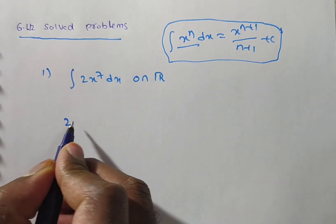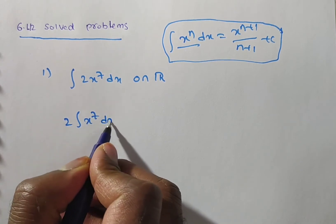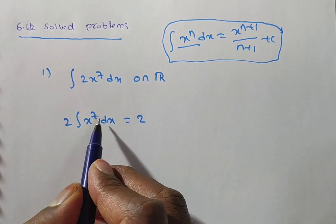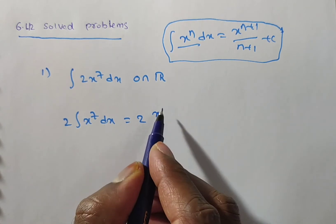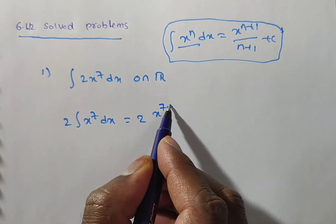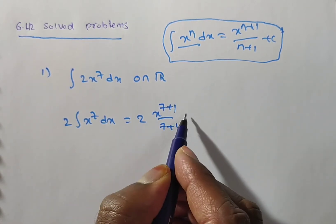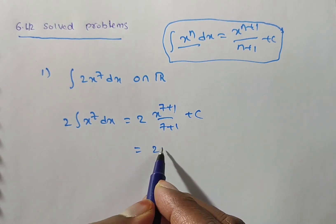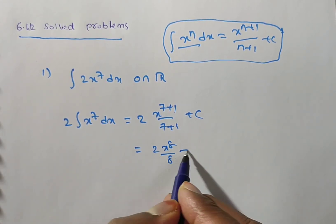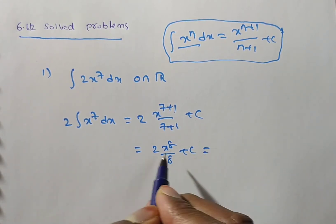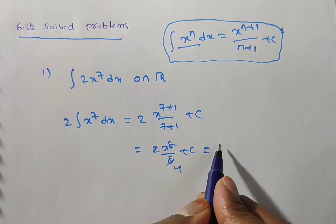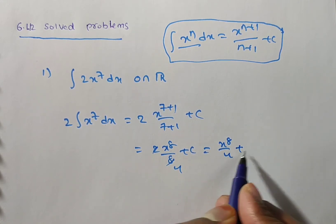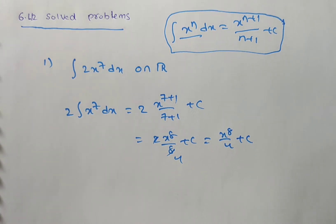So integral of 2x to the power of 7 dx. Integral of x power 7 is x to the power of 7 plus 1 divided by 7 plus 1 plus c, which is 2x to the power of 8 divided by 8 plus c. Simplifying: 2 divided by 8 gives x to the power of 8 divided by 4 plus c. This is the first problem.